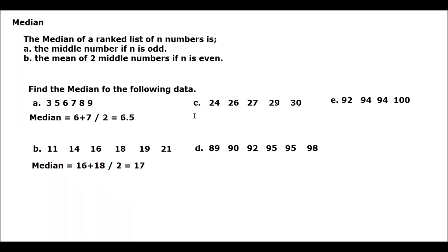For letter C, counting the number of data gives us 5. So N is odd, therefore the median is the middle number. The middle number is 27. That will be our median.